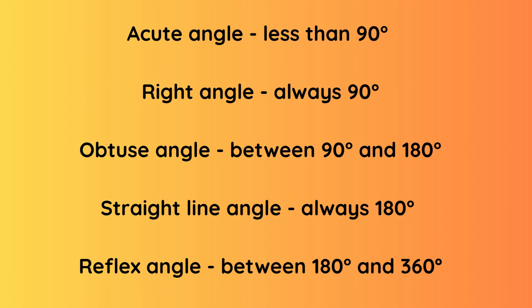Quick recap. Acute angle is less than 90 degrees. A right angle is always 90 degrees. Obtuse angle is between 90 degrees and 180 degrees. A straight line angle is always 180 degrees. And finally, a reflex angle is between 180 degrees and 360 degrees.